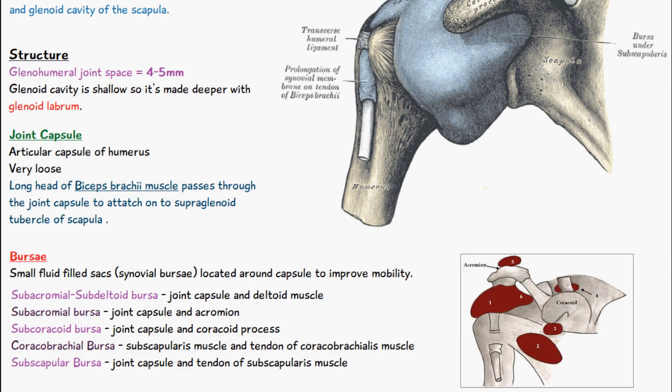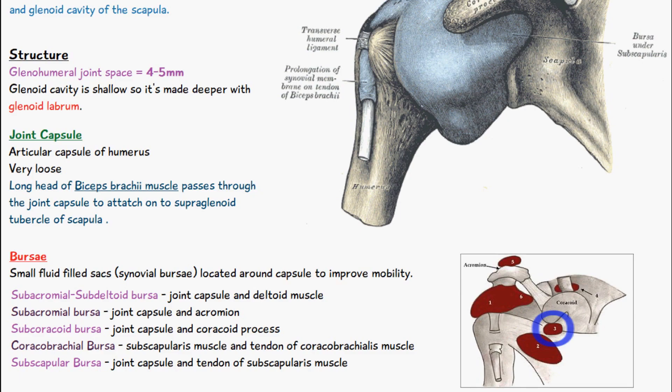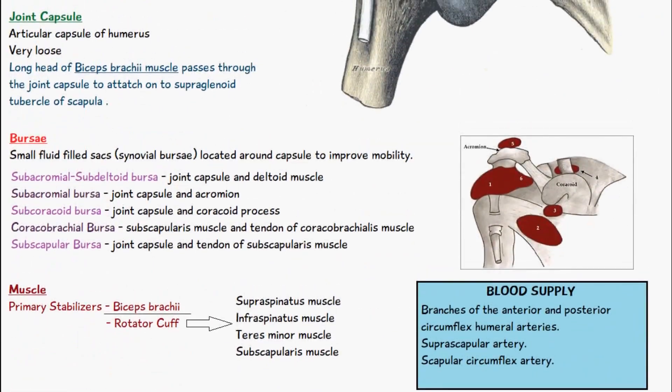There are five different types of bursae within the shoulder joint. There's the subacromial subdeltoid bursa, which is between the joint capsule and the deltoid muscle. The subacromial bursa, which is between the joint capsule and the acromion. The subcoracoid bursa, which is between the joint capsule and the coracoid process. The coracobrachial bursa, which is between the subscapularis muscle and the tendon of the coracobrachialis muscle. And the subscapular bursa, which is between the joint capsule and the tendon of the subscapularis muscle.